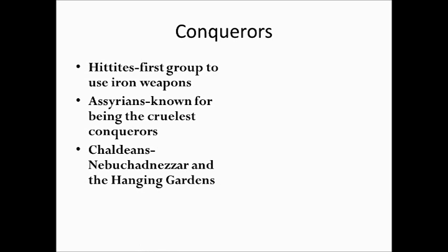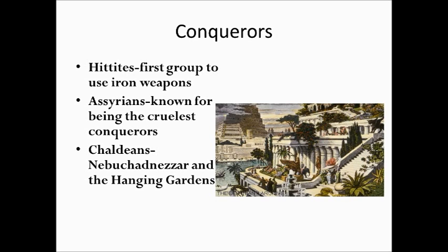The third group are called the Chaldeans, and they are significant mainly because of one of their major rulers. They're the group that captured the Jews and took them back into captivity in Babylon. But the Chaldeans are most famous because of a ruler named Nebuchadnezzar, who had the Hanging Gardens of Babylon built. He had the gardens built for one of his favorite wives because she was homesick, so he sent men to her homeland and brought back animals and plants, having this elaborate garden built with water pumps and everything else.